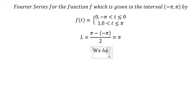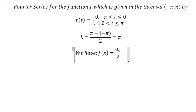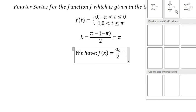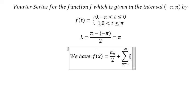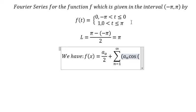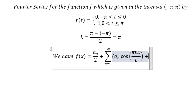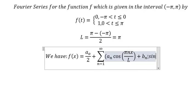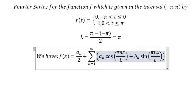Now we have the Fourier series formula: f(s) equals a₀ over two, plus the summation from n equals one to positive infinity of aₙ multiplied by cosine of (nπs over L), plus bₙ multiplied by sine of (nπs over L).